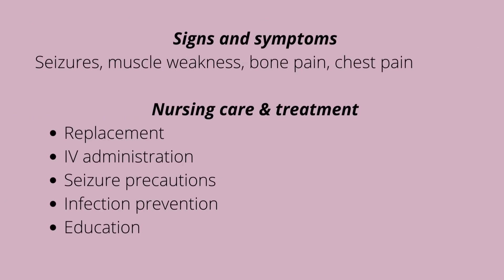Signs and symptoms of hypophosphatemia include muscle weakness, bone pain and deformities, confusion, chest pain, and involuntary eye movement that could cause blurred vision. Nursing treatment involves oral phosphate replacement, or IV administration of phosphorus for severe cases — always administered carefully. We gradually introduce the patient to TPN with a testing dose first. The patient will be on seizure precautions, infection prevention, and dietary education. Phosphorus has an inverse relationship with calcium.